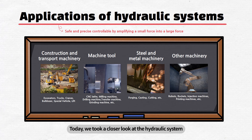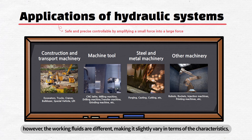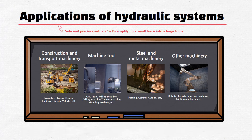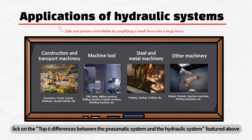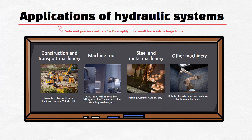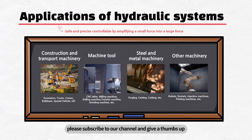Today, we took a closer look at the hydraulic system. Its process may seem similar to the pneumatic system. However, the working fluids are different, making it slightly vary in terms of the characteristics, applications, and devices. If you would like to learn more about the difference between the pneumatic system and the hydraulic system, click on the top six differences between the pneumatic system and the hydraulic system featured above. If you enjoyed today's video, please subscribe to our channel and give a thumbs up. I'll see you in the next video. Bye!